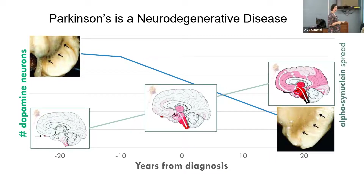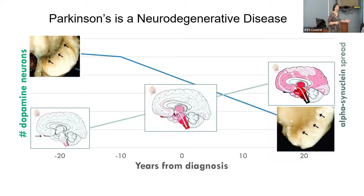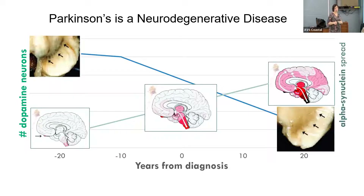We've found alpha-synuclein in the gut of patients who had colonoscopies with biopsies — decades before there's alpha-synuclein in the brain. We think it actually starts in the gut and then spreads up through the gut into the brain over time. That's why it takes 20 years, and that's why some patients will have constipation for decades before the onset of Parkinson's disease — because the gut is affected before the brain is affected.